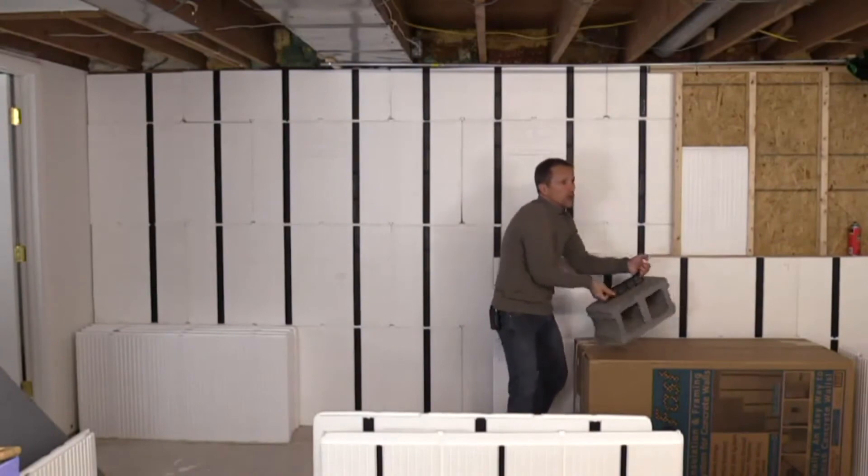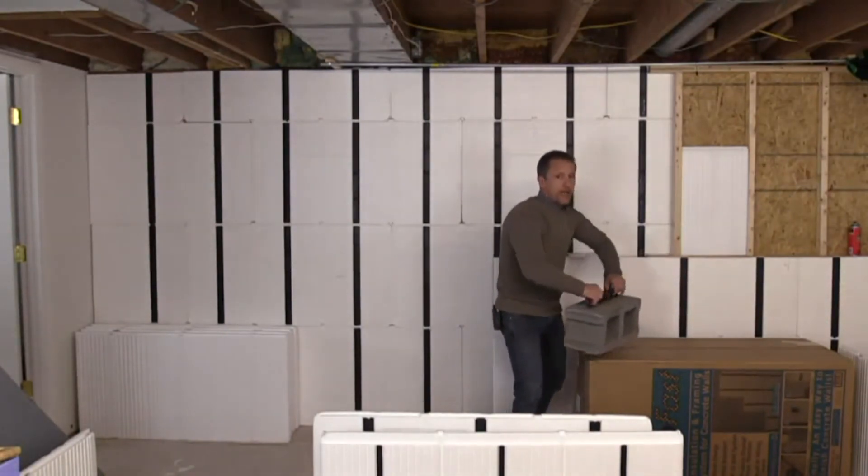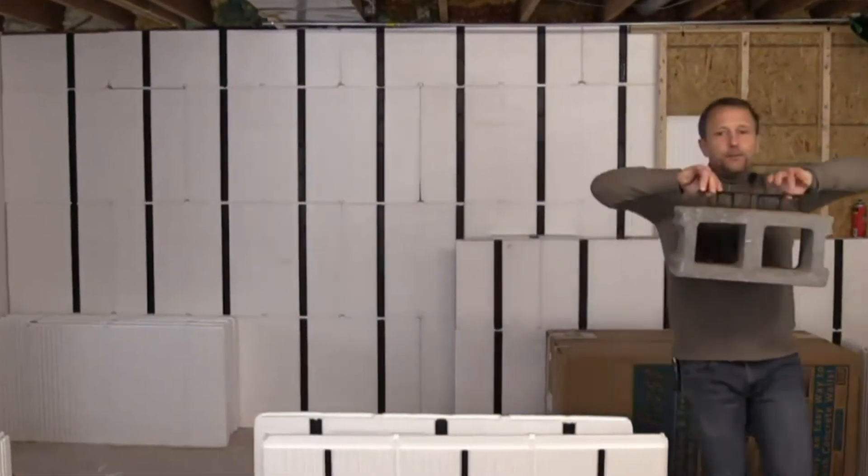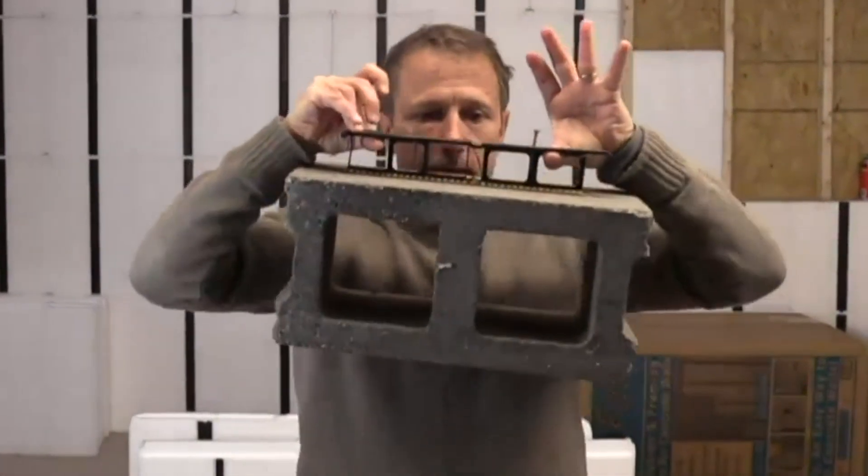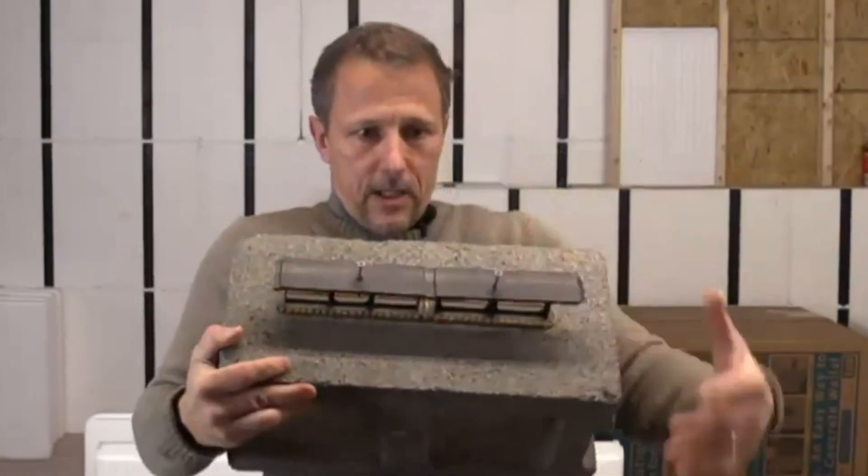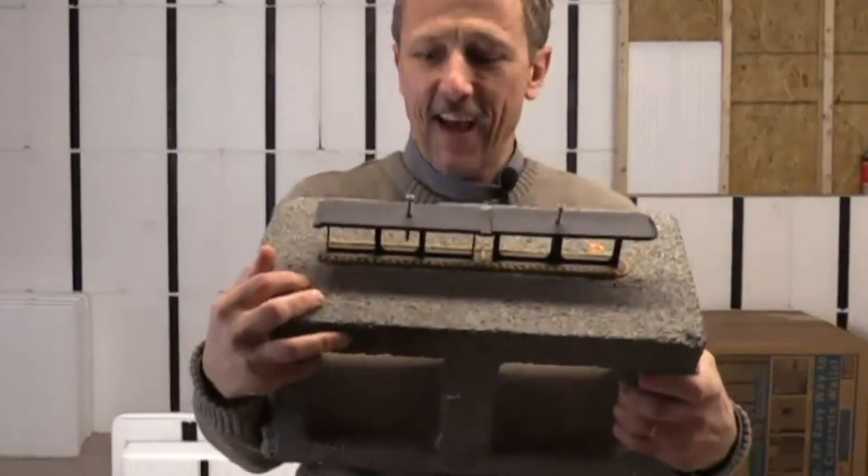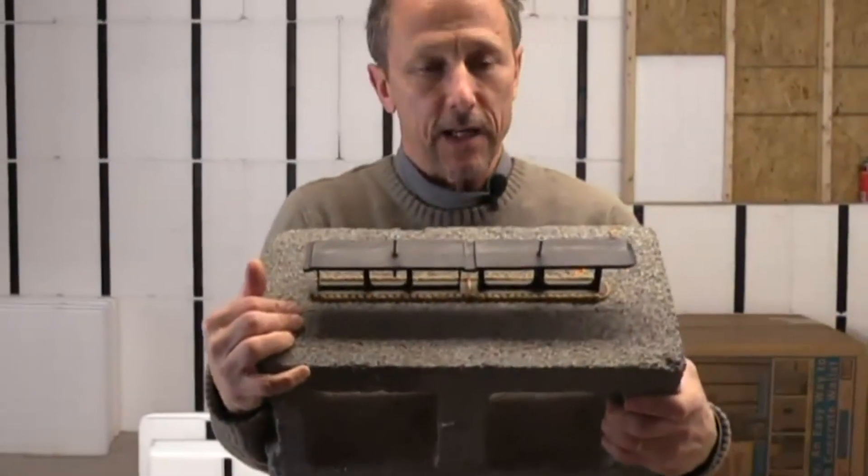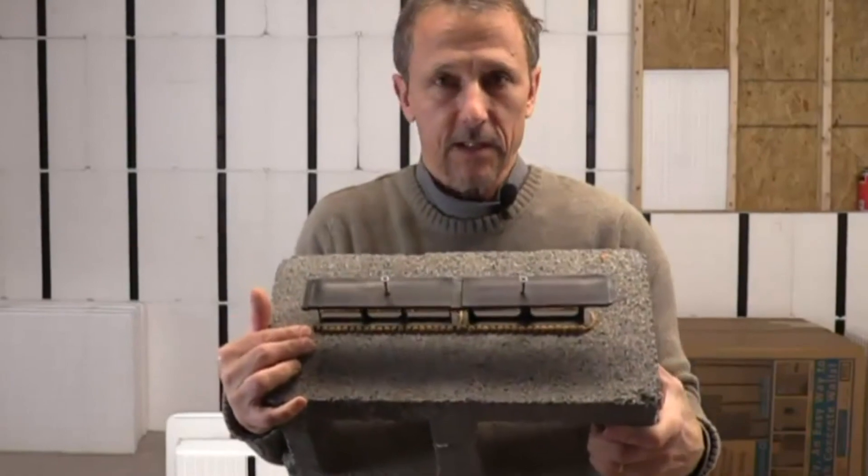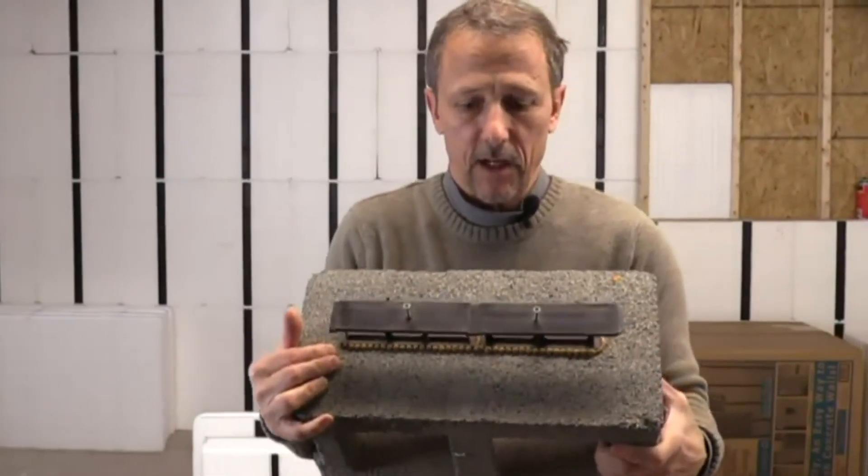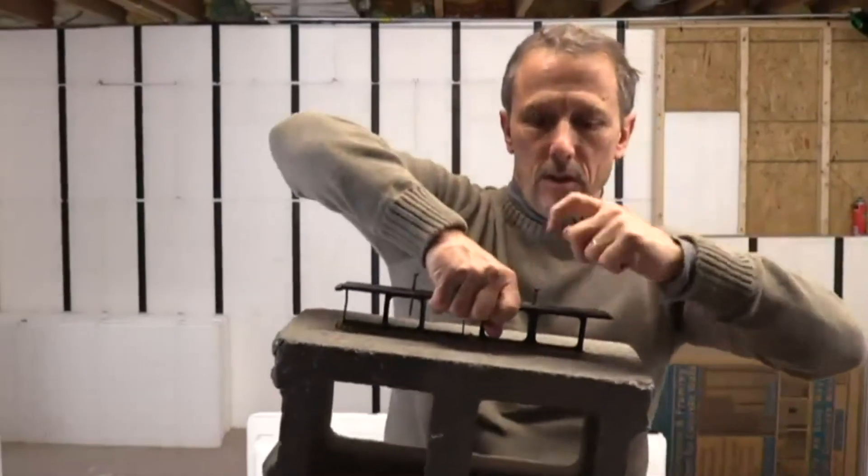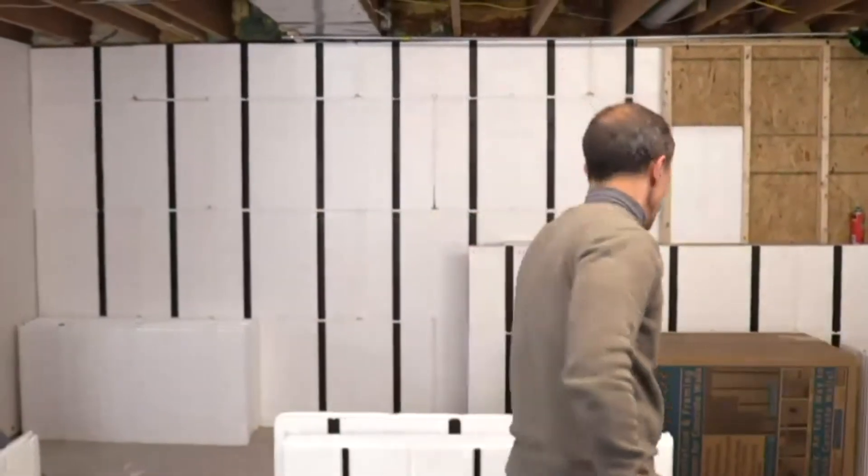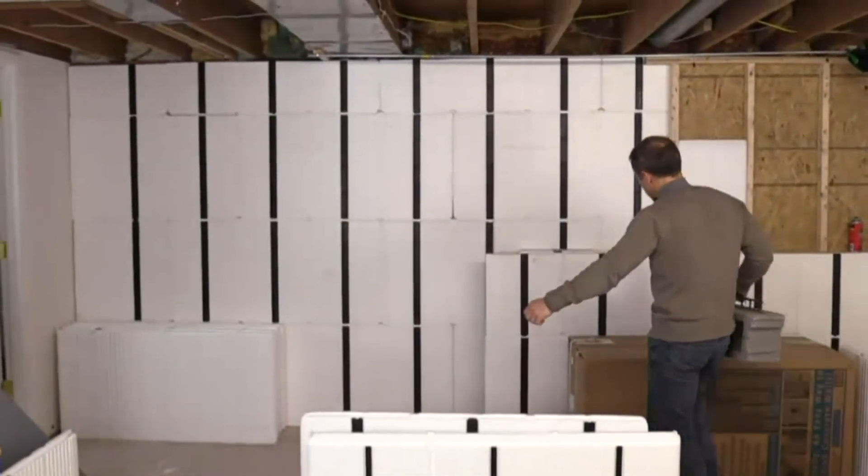When we glue it to a concrete block wall, you can see how the glue wraps around and embeds the stud directly to the concrete and holds it in place. Then the screws go into the plastic stud itself.